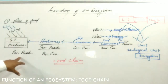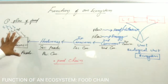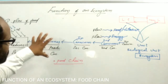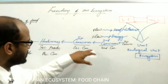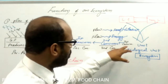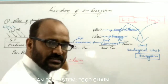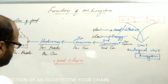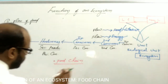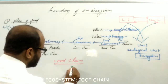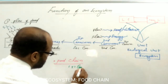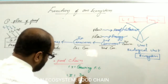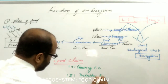Food is prepared by the primary producers. Such food becomes the food of the herbivores, and the herbivores again become the food of the first carnivore, and subsequently the top carnivore feeds on the second carnivore. Food chain can be classified into two types: one is the grazing food chain and another is the detritus food chain.